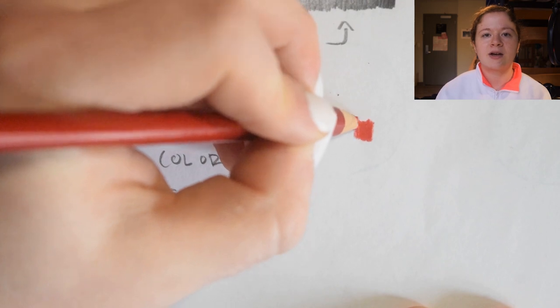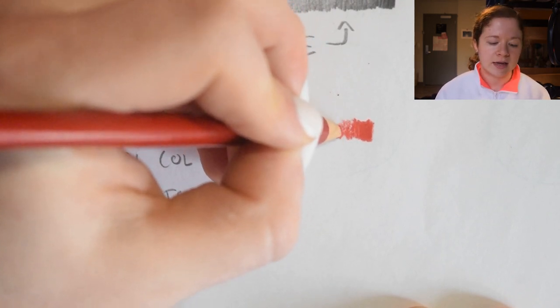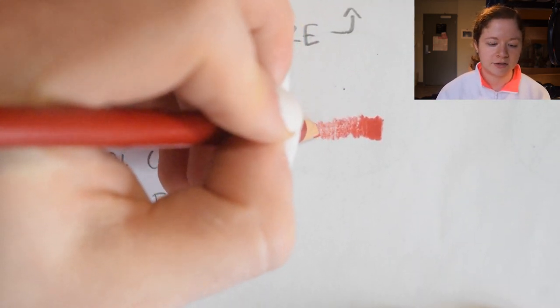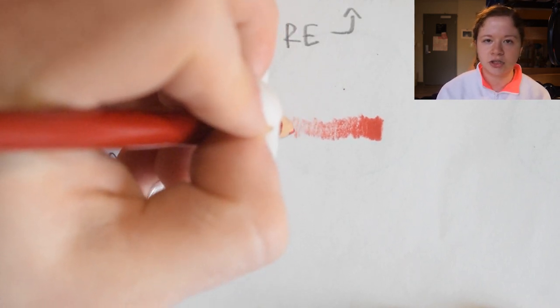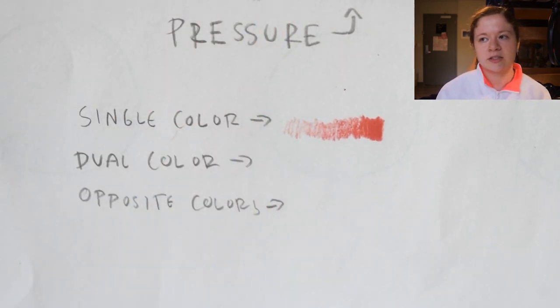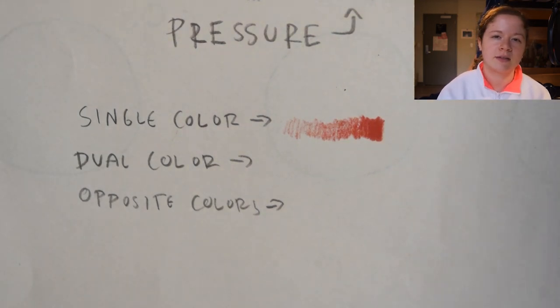Also, it'll be the most vibrant. And the lighter you push on it, the lighter the color is going to get. A lot like just a regular number two pencil. So that's how you can fade into white or make the color fade lighter.